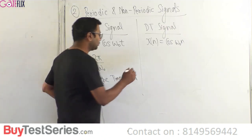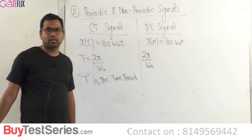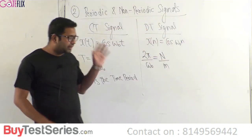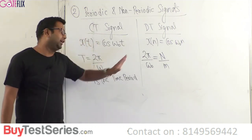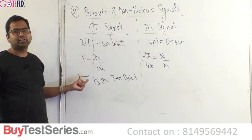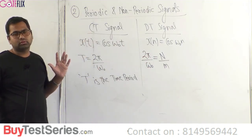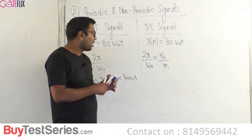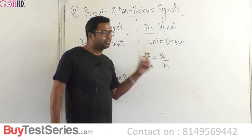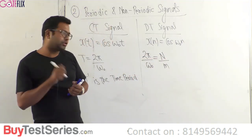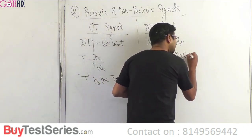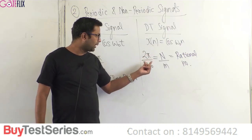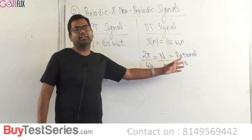For a discrete time signal x(n) = cos(ω₀n), we have to calculate the ratio 2π/ω₀. If the ratio 2π/ω₀ equals N/M — a ratio of two integers, which is a rational number — then the signal x(n) is periodic, with capital N called the discrete time period, analogous to capital T for continuous time.